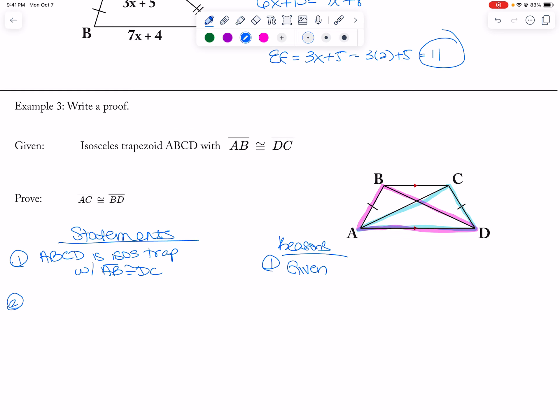So going back, the second thing I'm going to do is say that angle BAD, which is here, is congruent to angle CDA. Is that right? Yeah, CDA. And that is a definition of an isosceles trapezoid, or you could say base angles of an isosceles trapezoid are congruent.